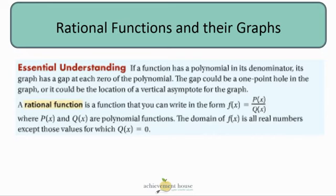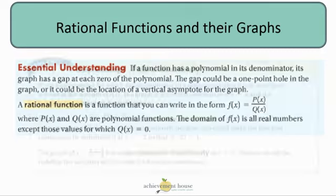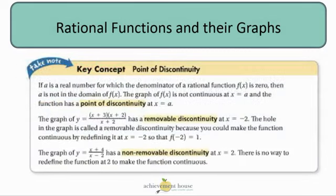What exactly is a rational function? Well, it's a function that you can write in the form of f(x) equals P(x) over Q(x), where P(x) and Q(x) are both polynomial functions. The domain of f(x) is all the real numbers, except those values for which Q(x), which is the denominator, equals zero.